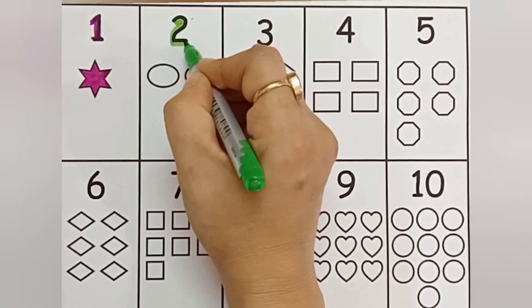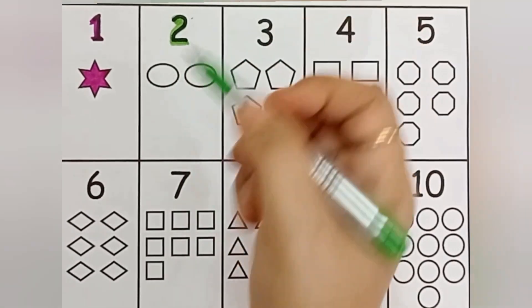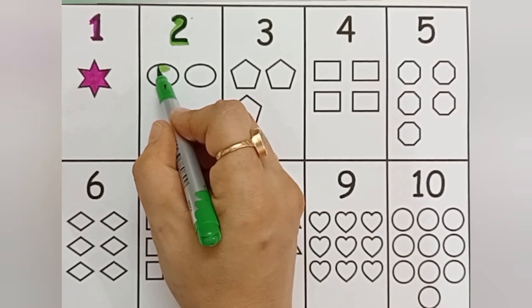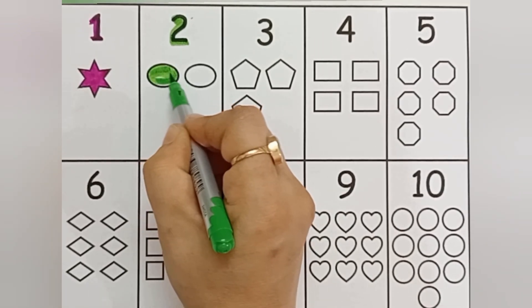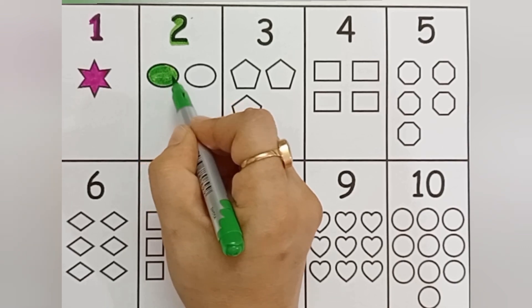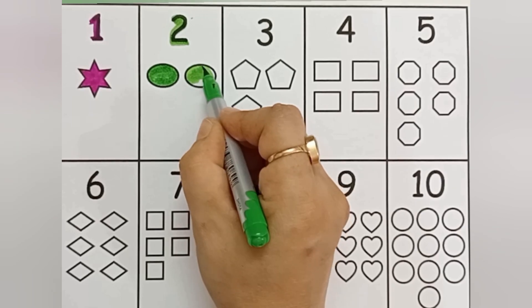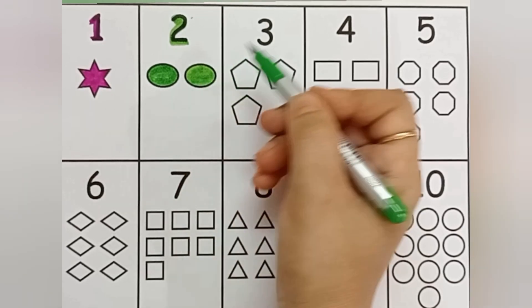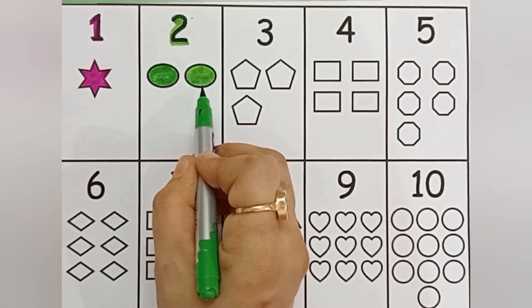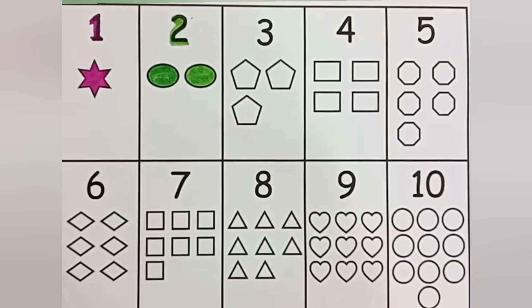Two. Green color, oval shape. Oval shape — one, two. Two oval shapes. One oval shape, two oval shapes. Two. Green color, blue color.